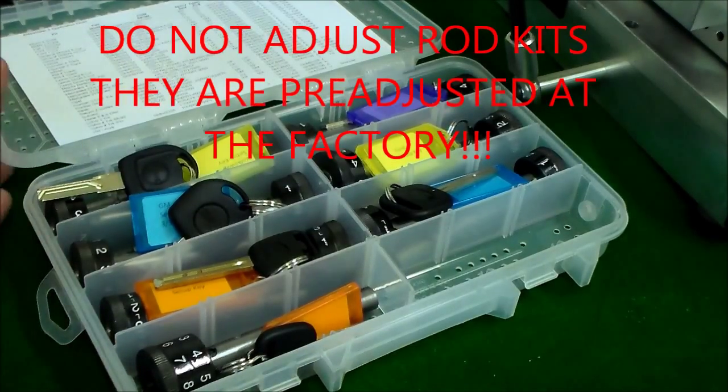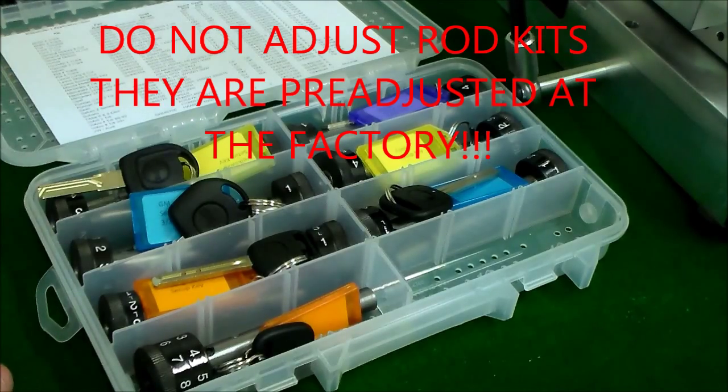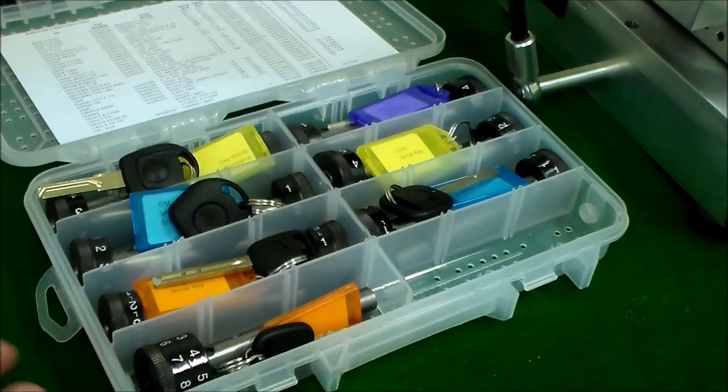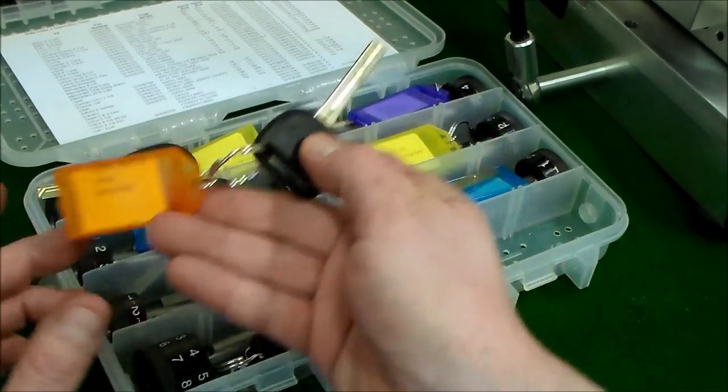Alright, the next thing we'll go over is the plastic kit that comes with the machine. This is what's going to hold all of your code rods. So, we'll just kind of go through these one by one.